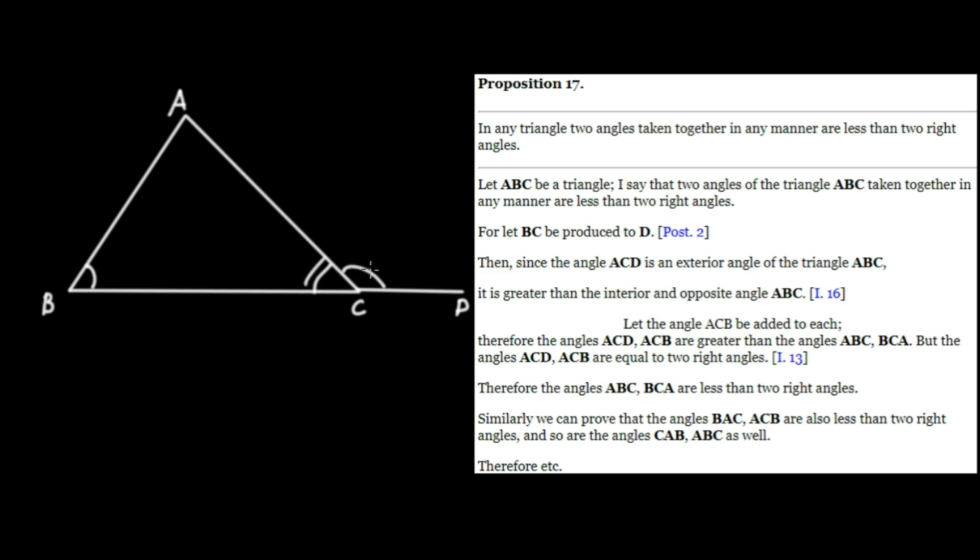Because remember, this exterior angle is guaranteed to be greater than this interior and opposite angle. And ACD, which sums to two right angles by Proposition 13, will exceed the sum of ABC and ACB.